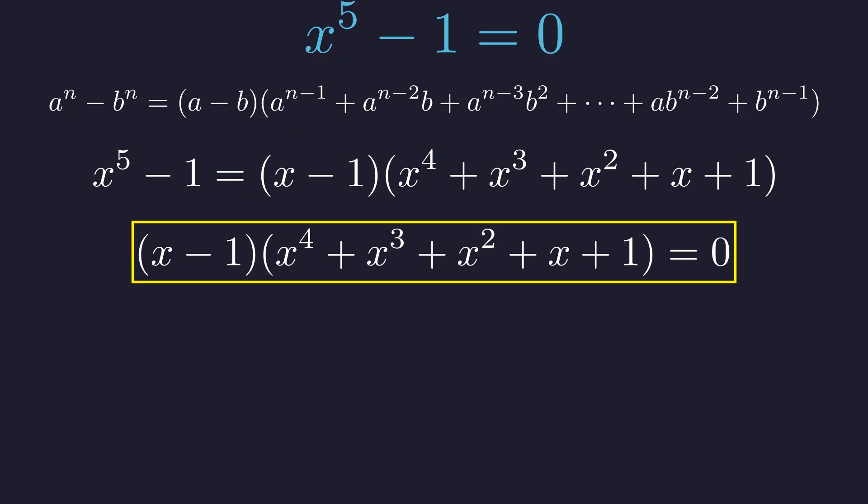But our four missing roots are the solutions to this fourth degree polynomial. Notice something beautiful about its structure. The coefficients are perfectly symmetric, one for each term. This symmetry is a deep hint of a hidden structure we can exploit. Think back to the pentagon. The four complex roots have a special property. They come in conjugate pairs. But there's something even more remarkable.